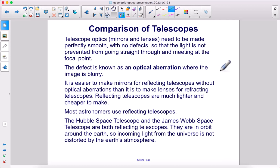Reflecting telescopes are much lighter and cheaper to make. Most astronomers use reflecting telescopes. The Hubble Space Telescope and the James Webb Space Telescope are both reflecting telescopes. They are in orbit around the Earth, so incoming light from the universe is not distorted by the Earth's atmosphere.